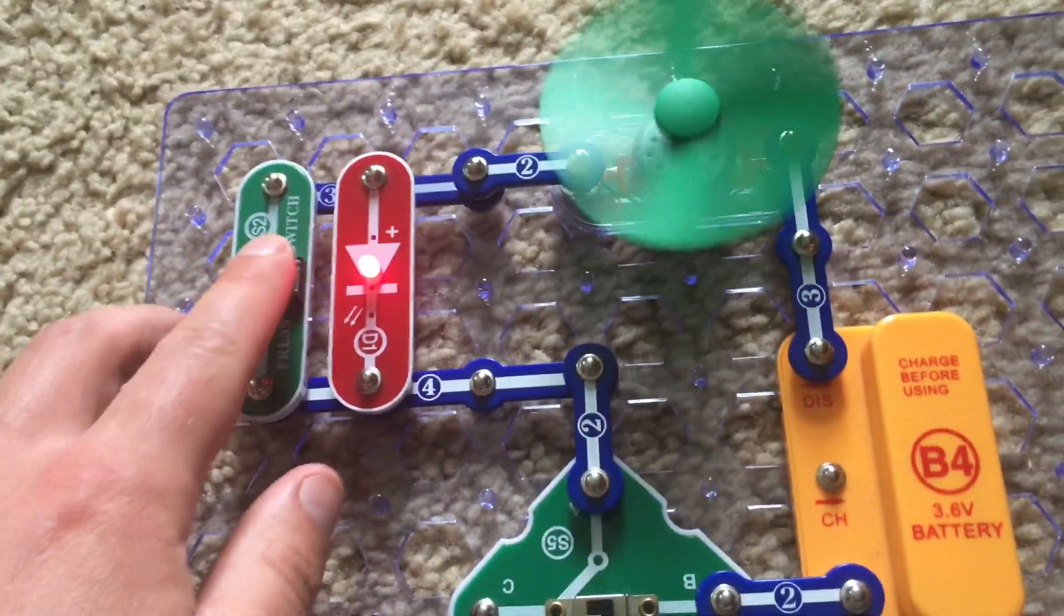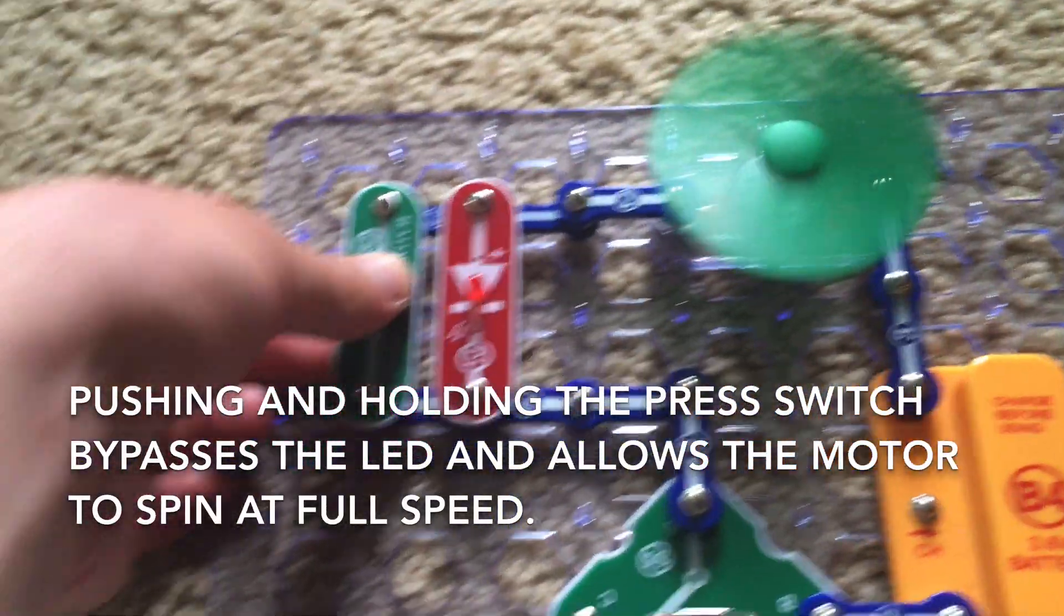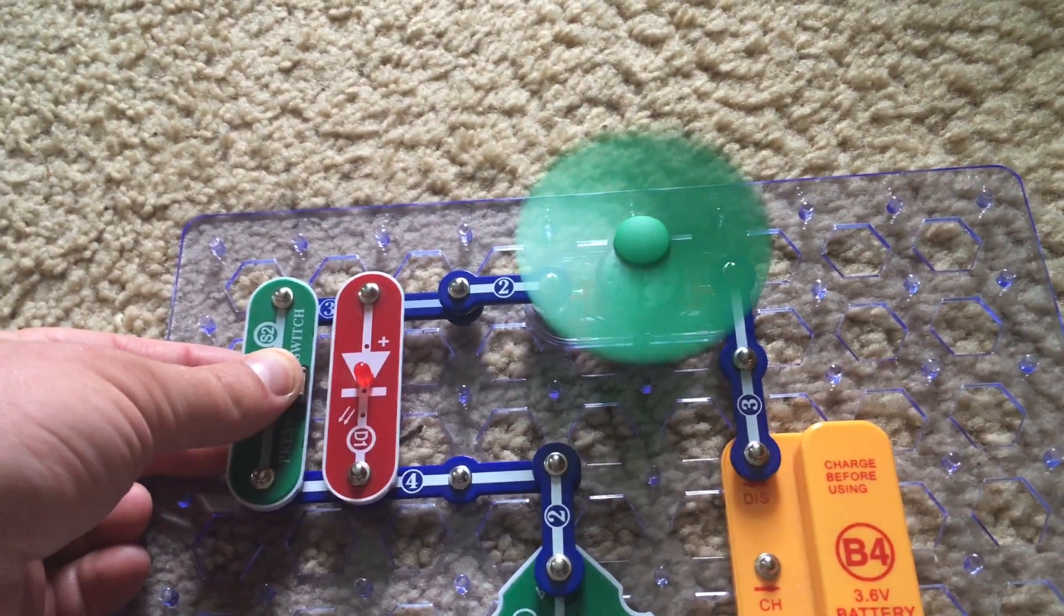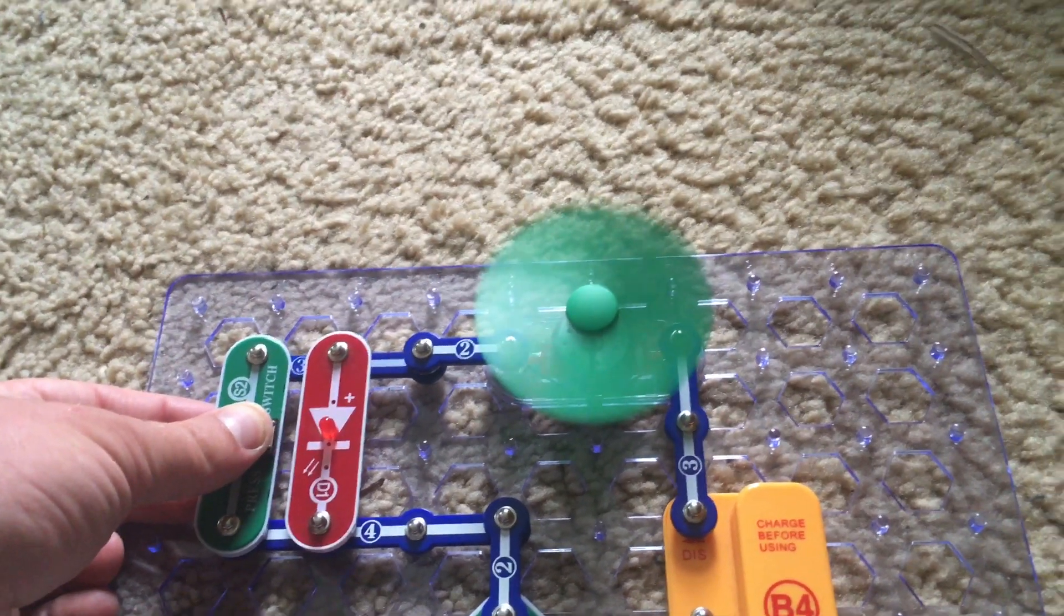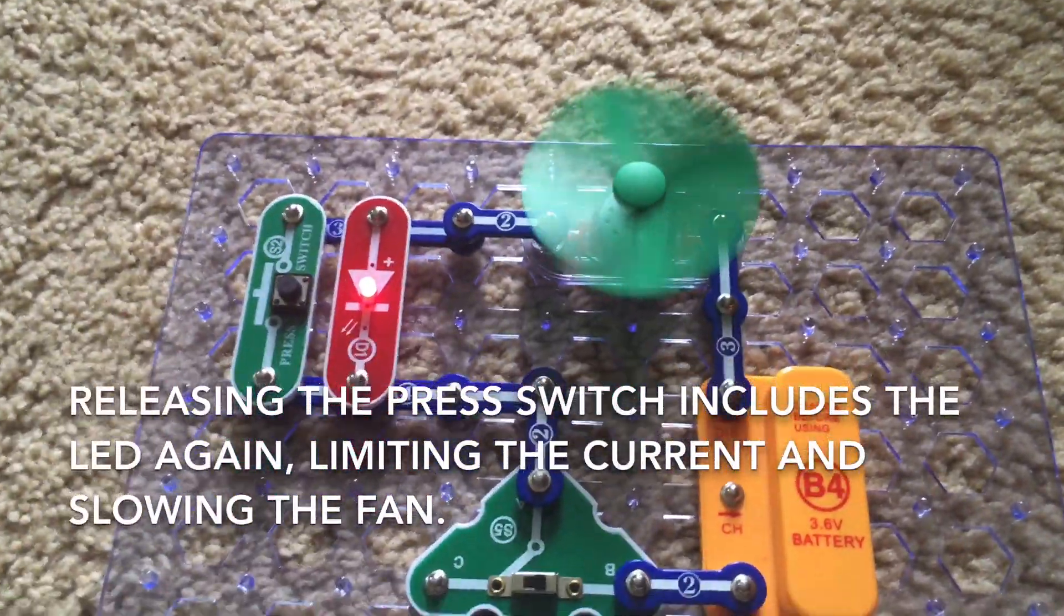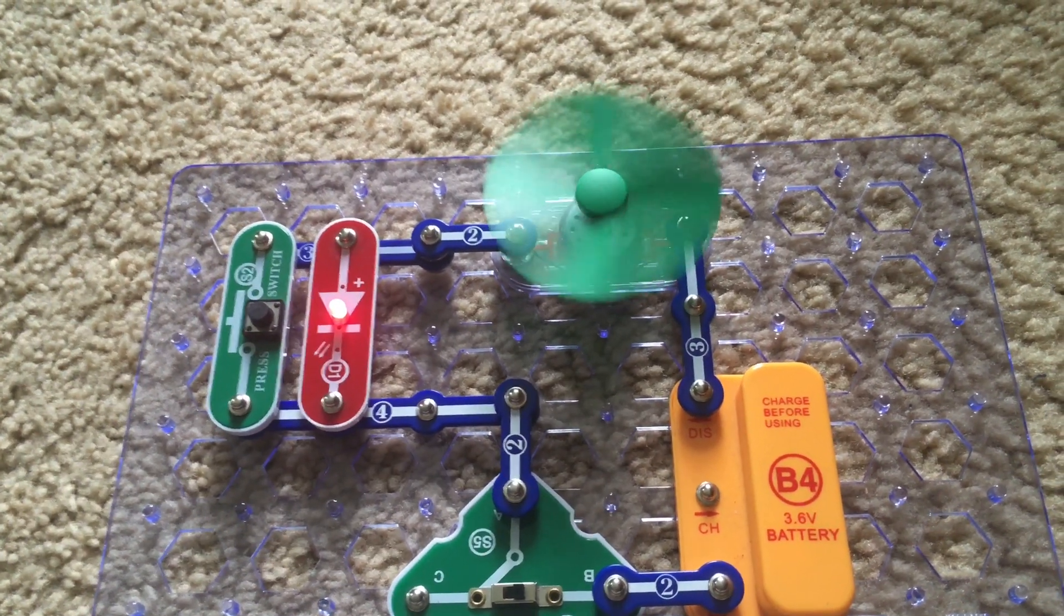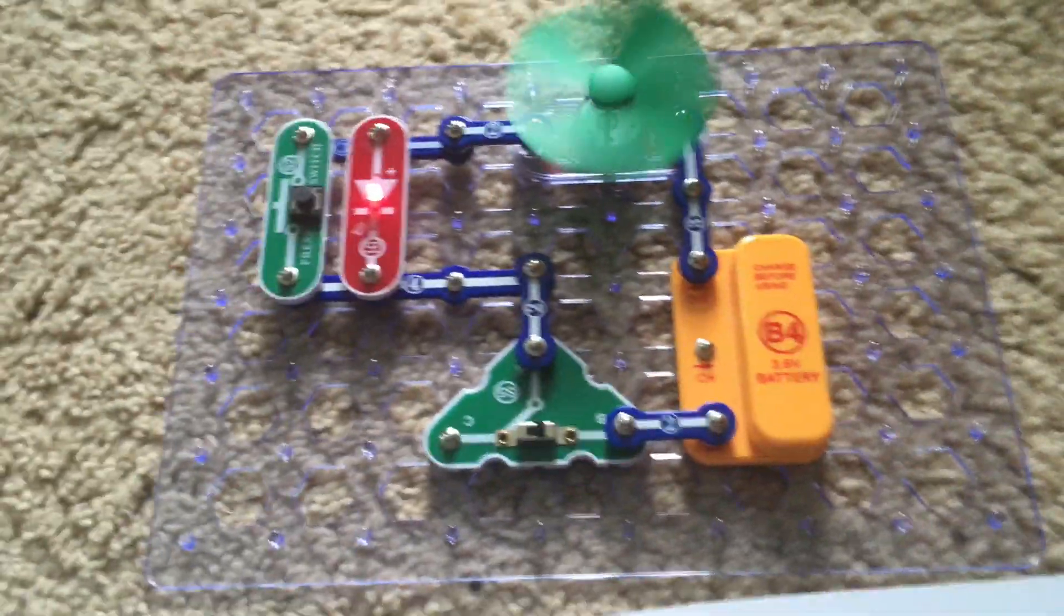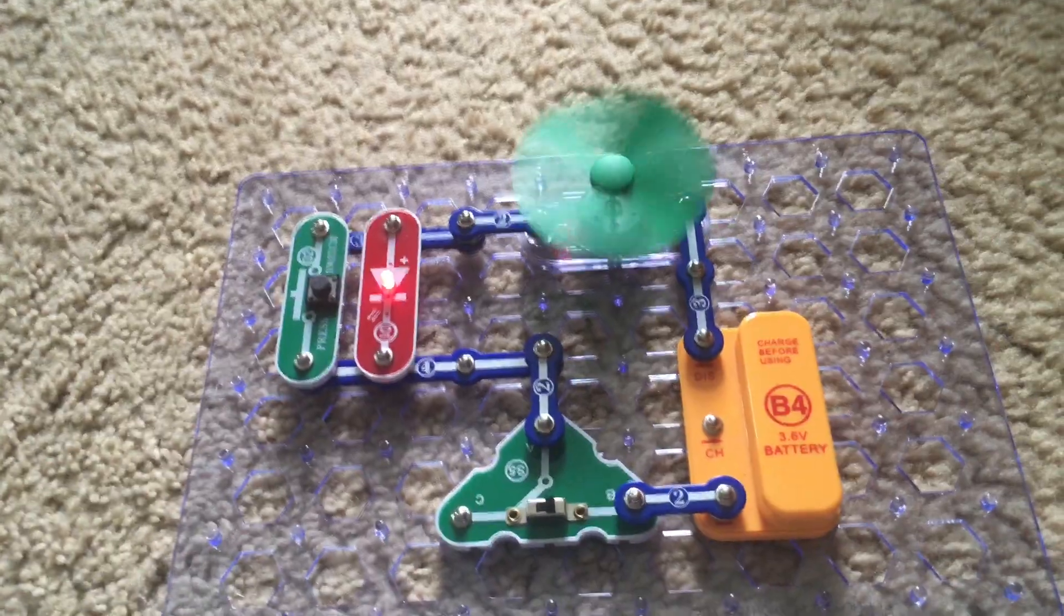But when I push and hold down the press switch, the motor rotates at full speed because now the LED is bypassed and it turns off. When I release the press switch, the motor will slow down because now the LED has been re-included in the circuit. The current now can flow through it again, and it's limiting the power through the motor.